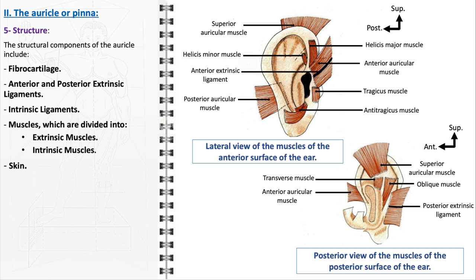Additionally, the skin contains hair follicles, sweat glands, and sebaceous glands, contributing to the maintenance of ear health and hygiene. Together, these structural components make the auricle a highly specialized, efficient organ for capturing and directing sound.